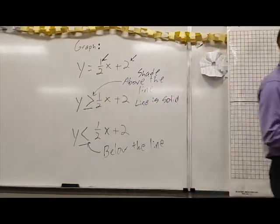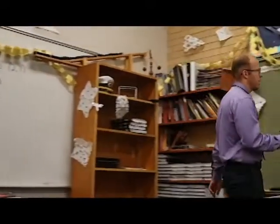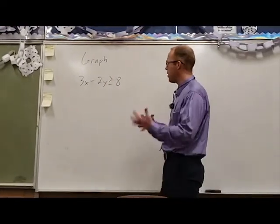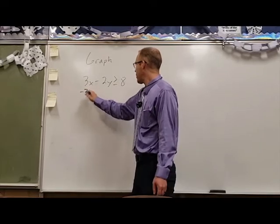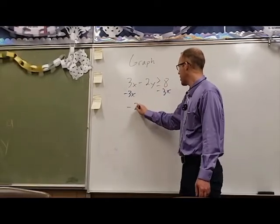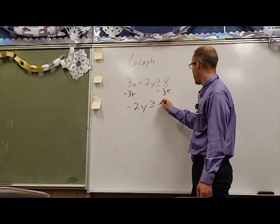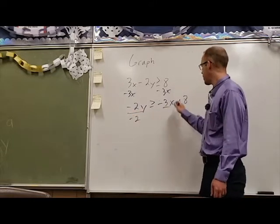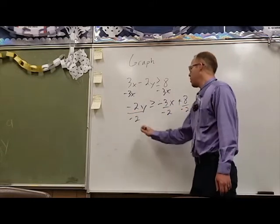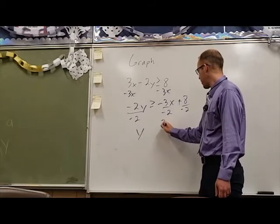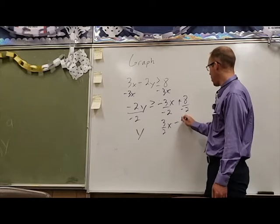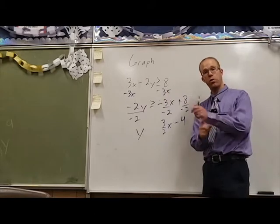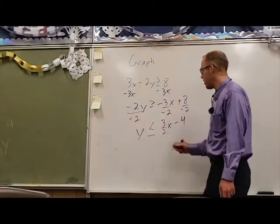Let's do one more example. This one is not in slope-intercept form, so I'm going to rearrange it. We subtract 3x on both sides, giving us negative 2y greater than or equal to negative 3x plus 8. Then we divide both sides by negative 2, giving us y and positive three-halves x minus 4. We need to remember that when we divide by a negative number, our inequality symbol switches directions — so now it is less than or equal to.